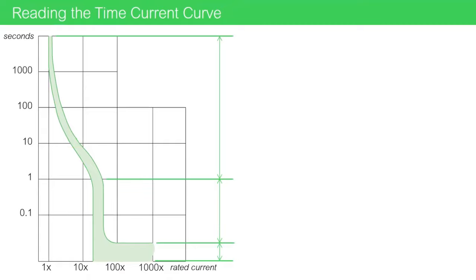The time-current curve is made up of three distinct ranges. These ranges identify the tripping responses to overload faults and short circuit faults.